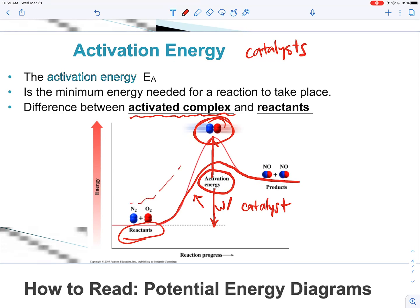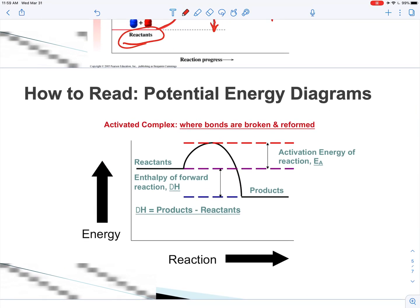We start with reactants and then follow along until we get to our products. The delta H — that D should be a triangle, that's delta H. We start with our reactants on the left, and as we gain more energy it goes up to the activated complex. That difference is the activation energy — what we have to get over this hump to reach our products. The delta H, the heat of our reaction, is going to be products minus reactants, the difference between those two lines.